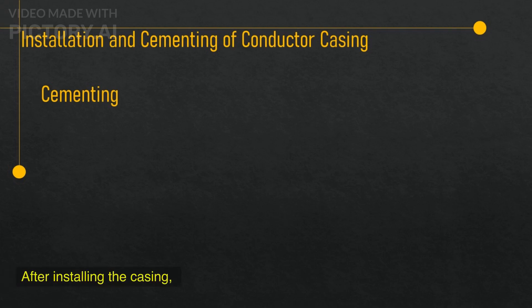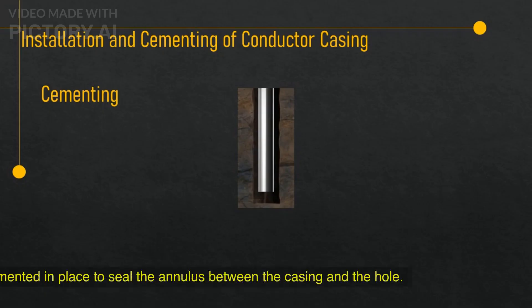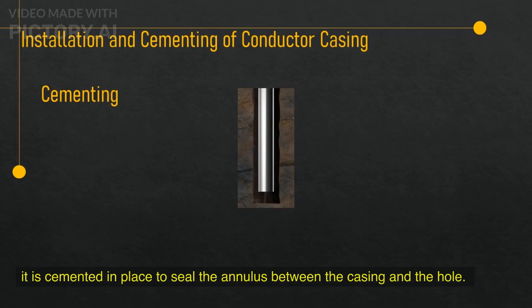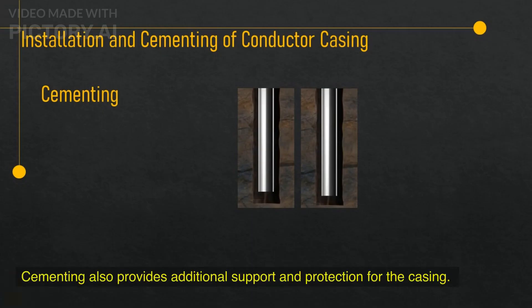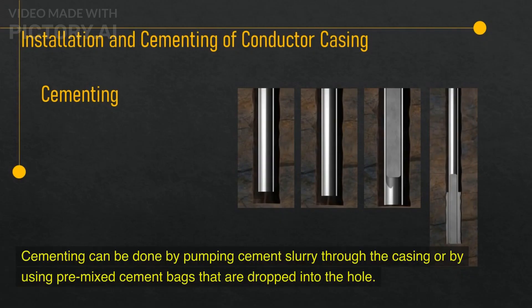After installing the casing, it is cemented in place to seal the annulus between the casing and the hole. Cementing also provides additional support and protection for the casing. Cementing can be done by pumping cement slurry through the casing, or by using pre-mixed cement bags that are dropped into the hole.